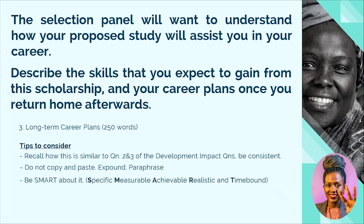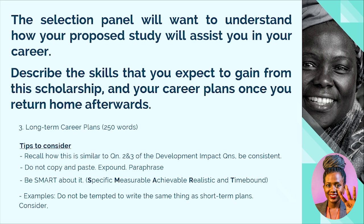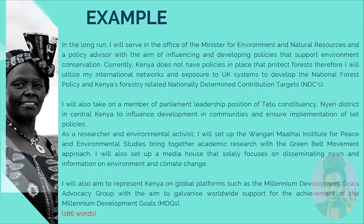Be SMART again — any scholarship asking about career plans requires specific, measurable, achievable, realistic, and time-bound responses. One thing I want to stress: do not be tempted to write the same things you wrote in your short-term plans. Instead, consider things like running for office, long-term partnerships you could be involved in, or opening your own organization — things you can only realistically achieve in the long run. Pause here and write bullet points on some of the things you think can only be achieved in the long run.